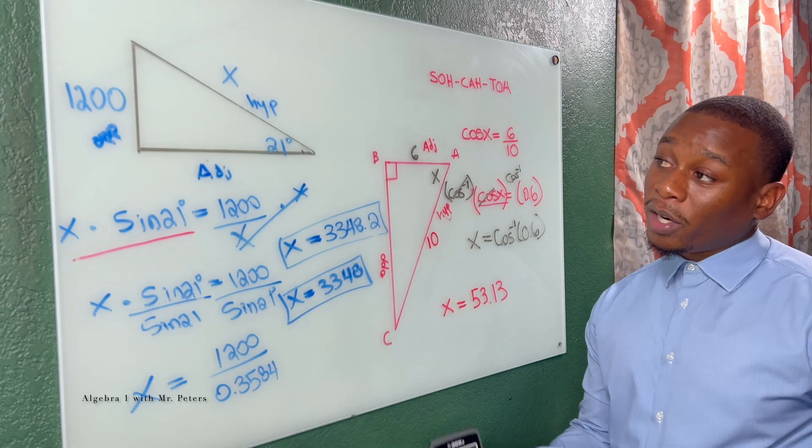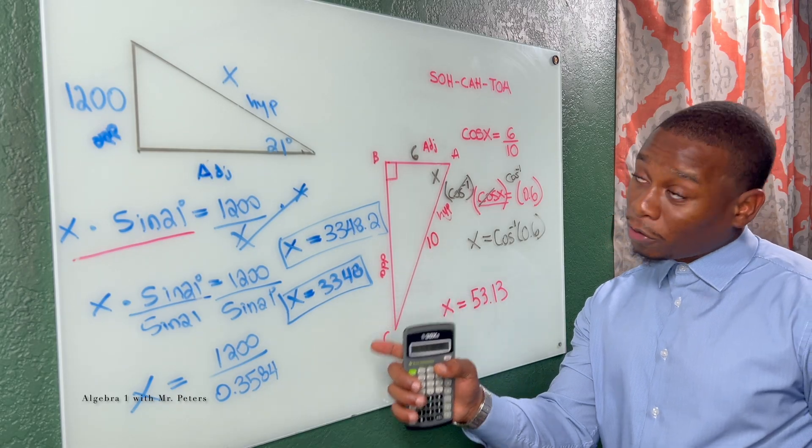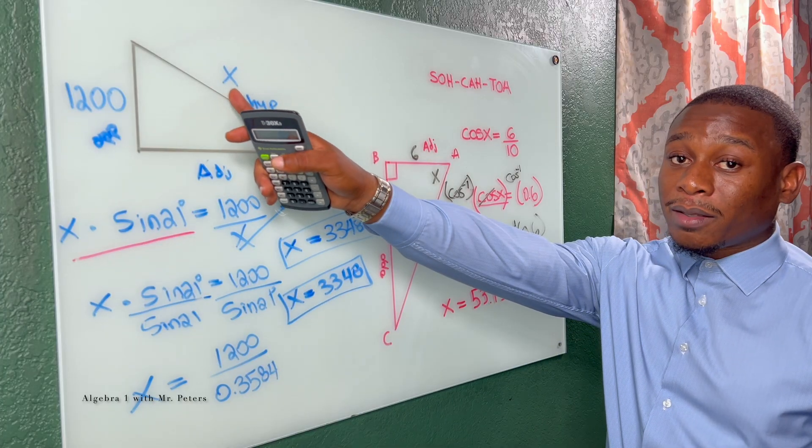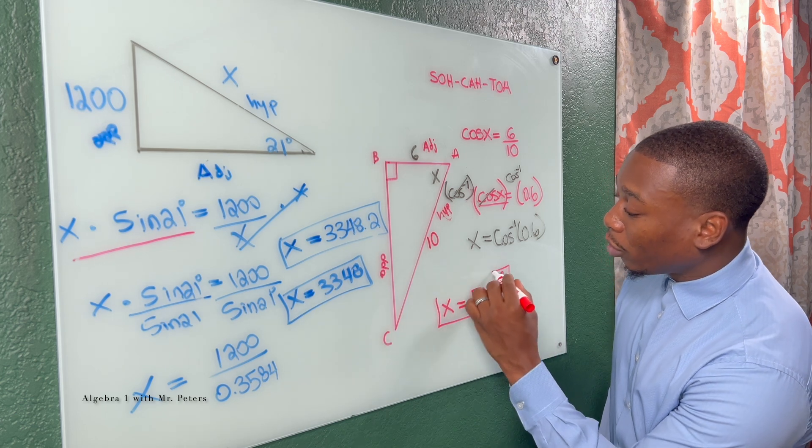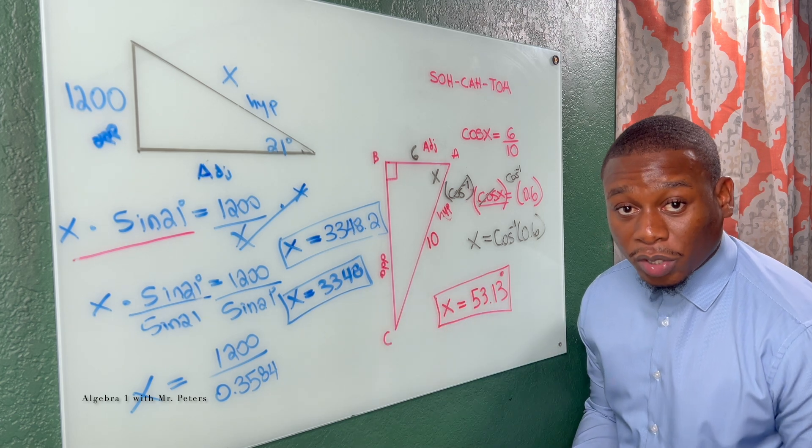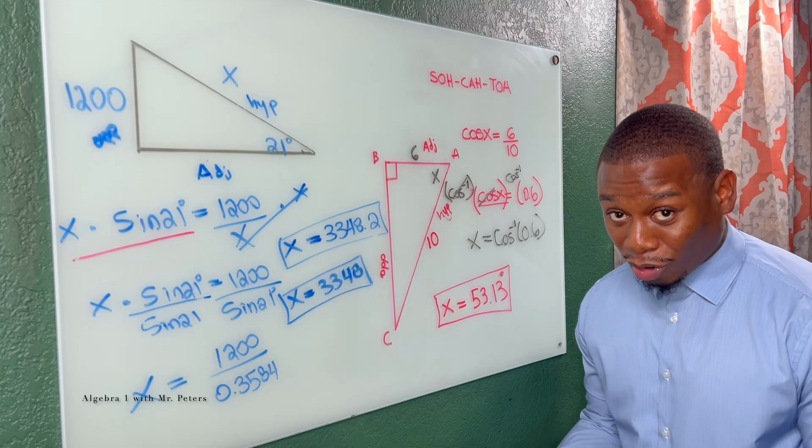Now, please remember, compared to the first problem, the first problem was for a side length. Here, we're looking for an angle. So please make sure you include that degree symbol, or if it's multiple choice, you pick the correct answer that has the degree symbol.